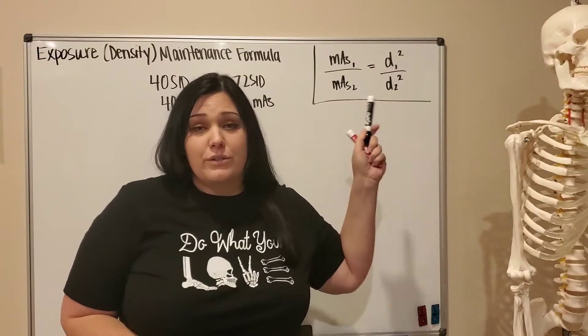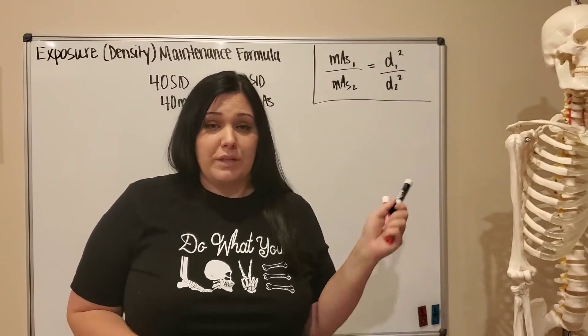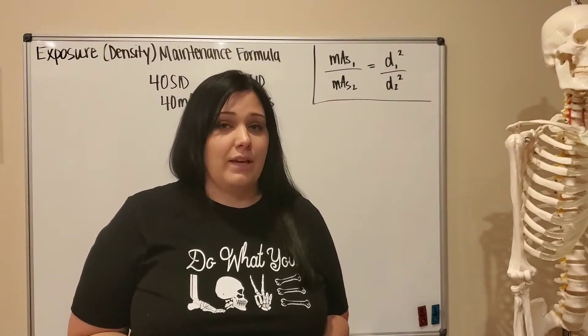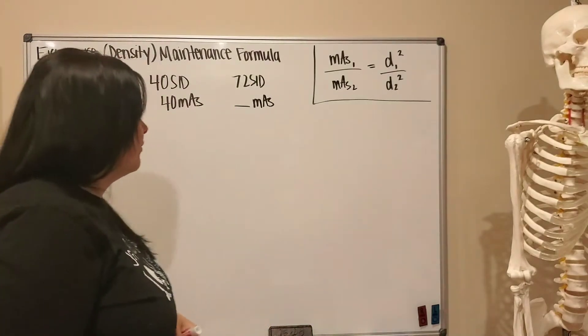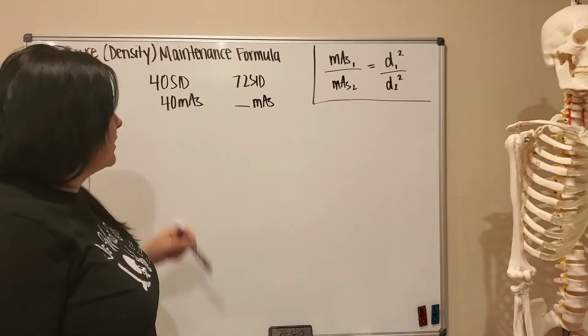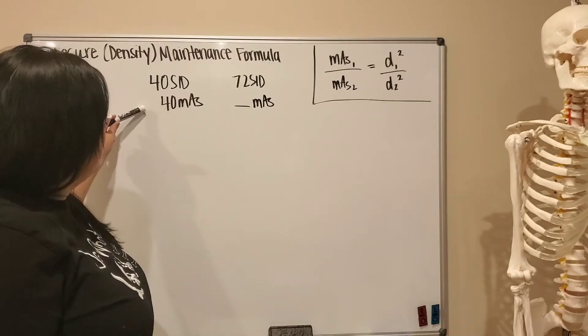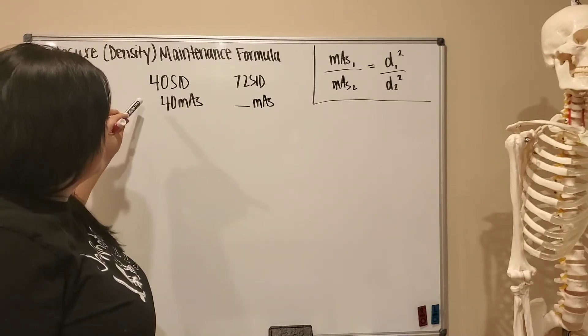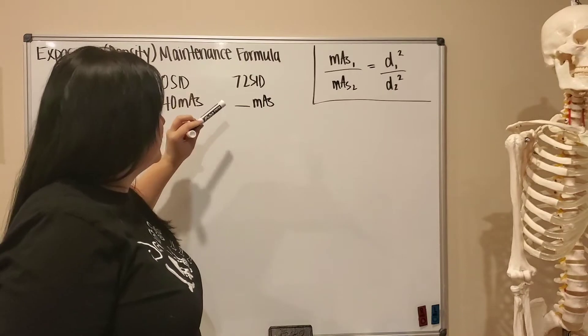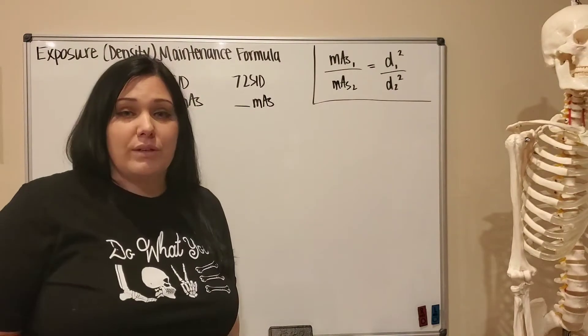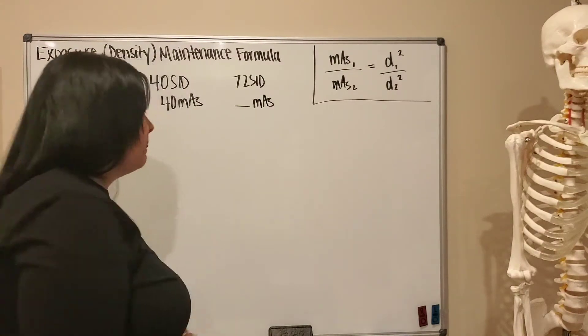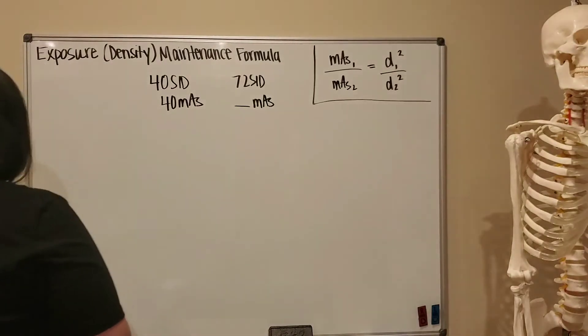In the corner I have the density maintenance formula in case you don't have it handy. Okay, so first things first, these are the variables that were supplied: you used a 40 inch SID and a 40 mAs, and a 72 inch SID. What would you need for your mAs?